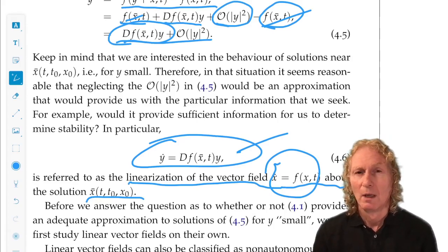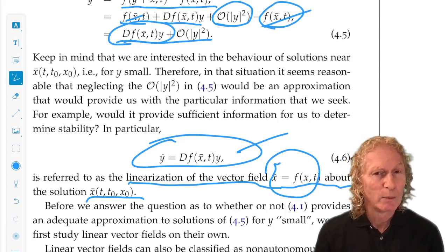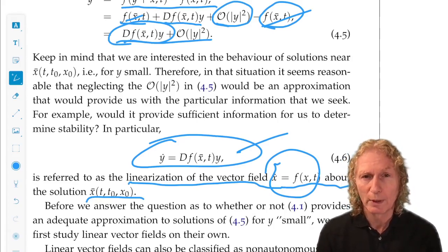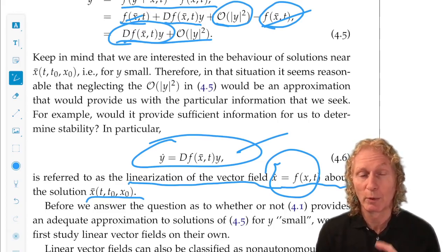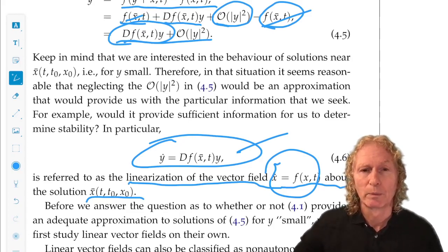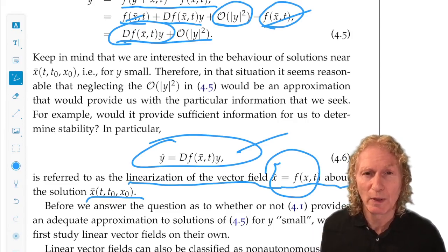And so, that's the motivation for studying linear equations, linearizations. So, we refer to 4.6 as the linearization of the vector field, that's the right-hand side, about this solution. It's a bit of a mouthful, but it tells you exactly what you're doing. You're linearizing about the solution X̄. What does that mean? It means you convert the original equation to a linear equation.